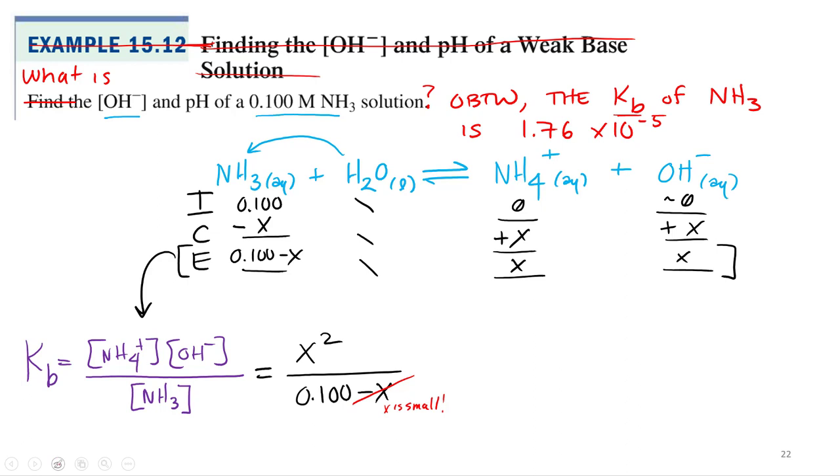We've got X is small, so now KB equals X squared all over 0.100. Multiply both sides by 0.1, so 0.100 times KB equals X squared. Take square root of both sides: X equals square root of 0.100 times KB, which is 1.76 times 10^-5.